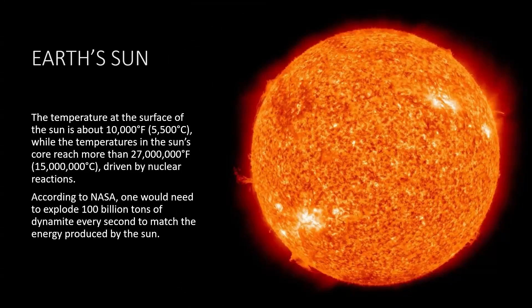When we're talking about temperatures, the temperature at the surface of the Sun is about 10,000 degrees Fahrenheit, or 5,500 degrees Celsius. But while the temperatures in the Sun's core reach more than 27 million Fahrenheit and 15 million Celsius, driven by nuclear reactions.